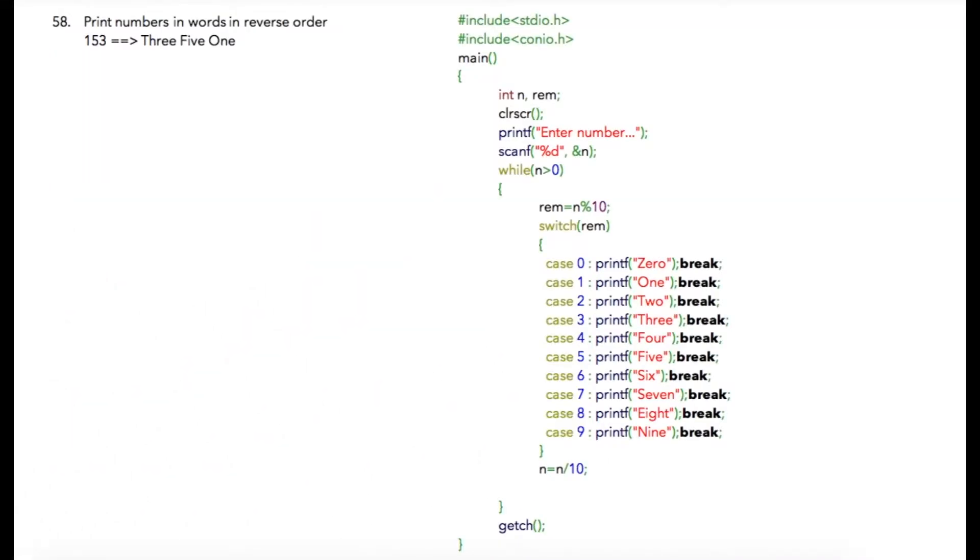In this program we are going to ask user to enter a number and then we are going to print words corresponding to that number but in reverse order. So if user has entered 153, our output will be 351 in words.